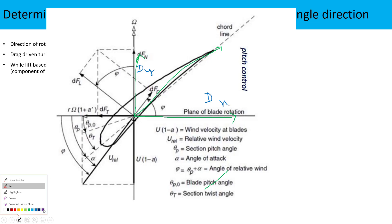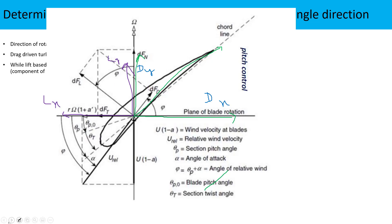Similarly, the lift is distributed into two components: the vertical component (lift_y) and the horizontal component. This horizontal component acts in the minus x-direction (lift_x). The drag force in the wind direction introduces an axial induction force. Since the wind turbine cannot move in that direction, this axial force acts on the structure, which must be strong enough to resist it.